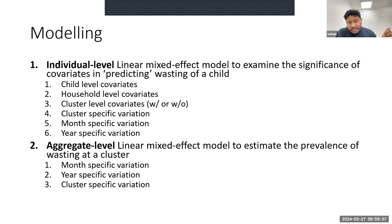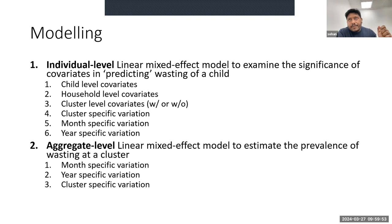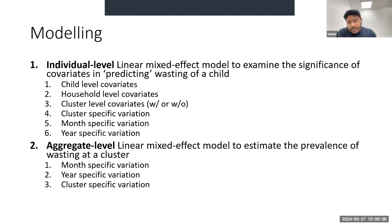In the individual level model, we have child level, household level, and cluster level features. Additionally, we included cluster level variation, month-specific variation, and year-specific variation, to account for the fact that if we cannot explain whether a child will have wasting based on those features, these other variables can capture those effects. We can then analyse what those effects are in the data. In the aggregate level model, we don't look at whether one particular child is wasting, but try to capture the prevalence of wasting in an area.